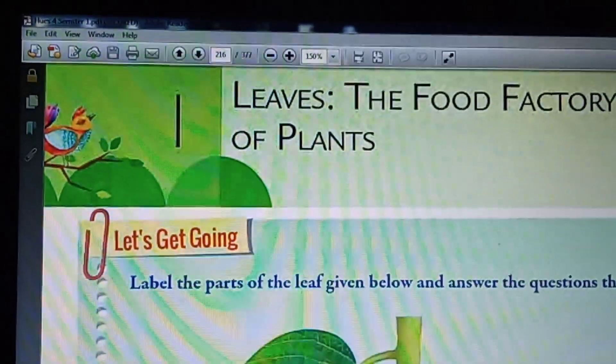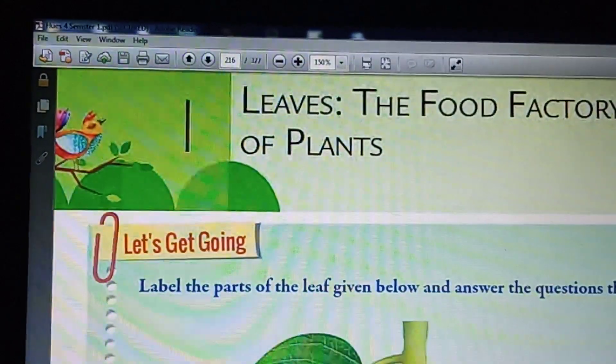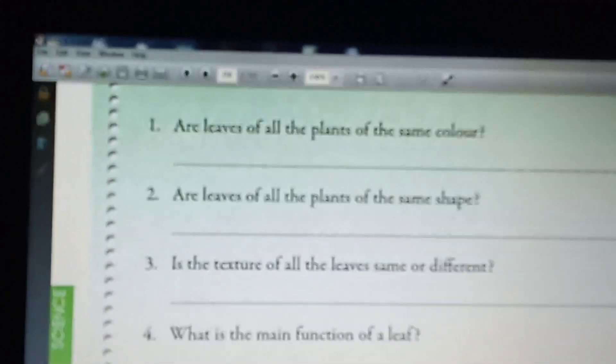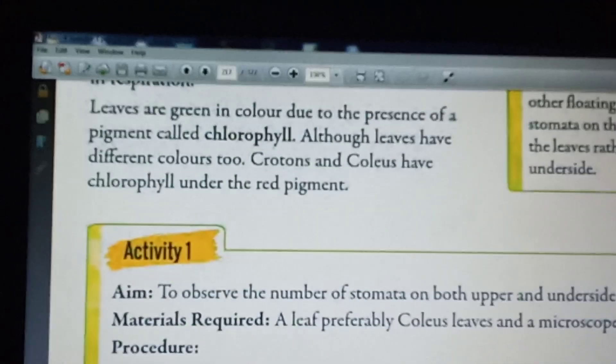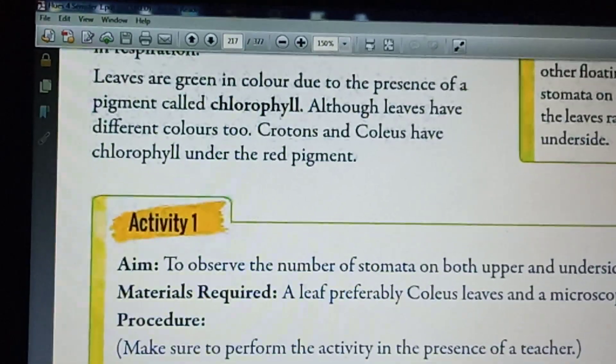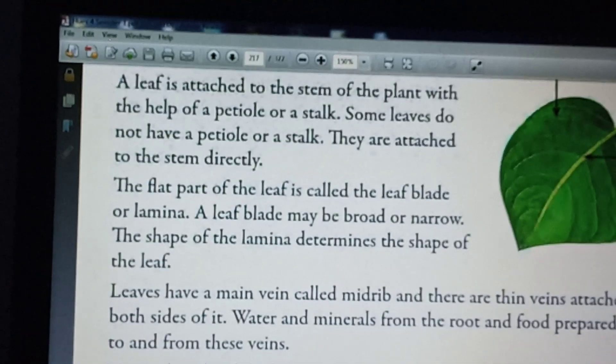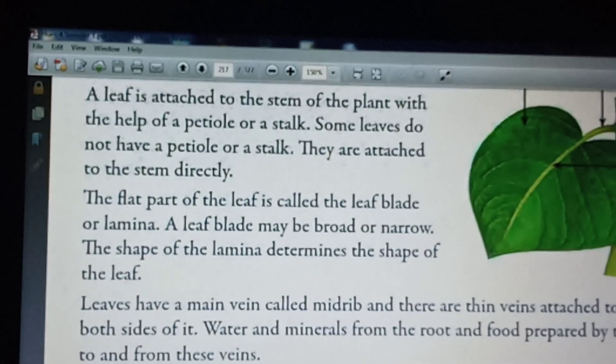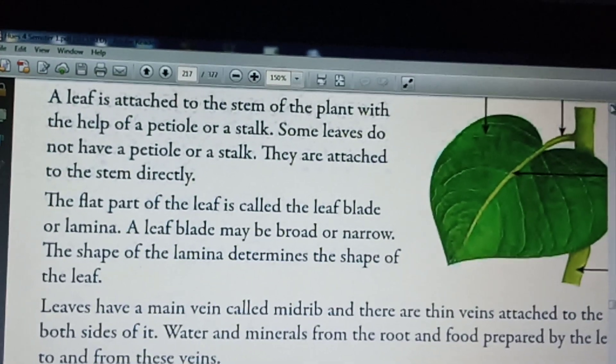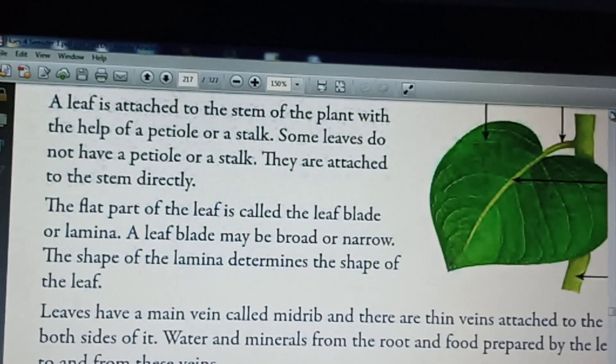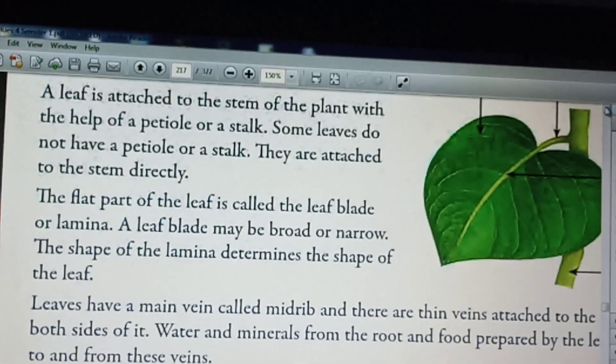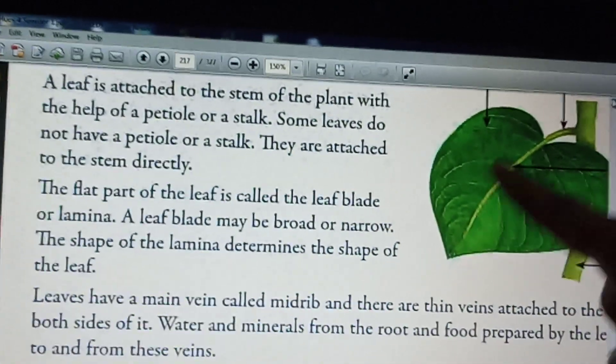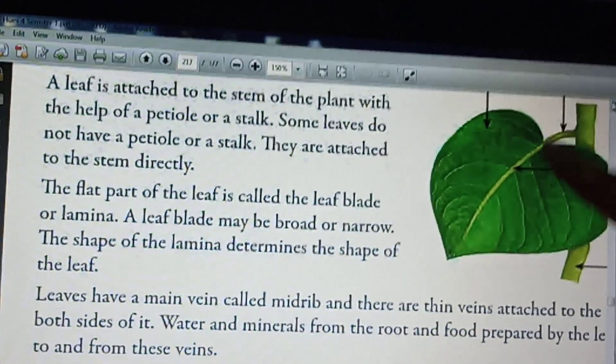Now I will explain the different parts of a leaf. A leaf is attached to the stem of the plant with the help of a petiole or a stalk. Some leaves do not have a petiole or a stalk. They are attached to the stem directly. Here this is a leaf and this leaf is attached to the stem with the help of a petiole or stalk.